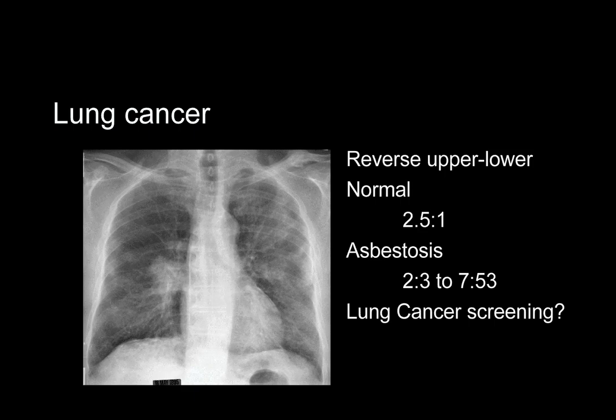Asbestos is an independent risk factor for the development of lung carcinoma, equivalent to that of a heavy smoker. If the exposed individual also smokes, the risk is multiplicative. Nearly one-third of those smokers with asbestosis die of lung cancer. In those with asbestosis, the cancer is more likely to arise in the lower lobes in contrast to general smokers. This raises the question of whether asbestos-exposed workers with pleural plaques should be screened for lung cancer.